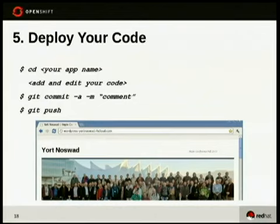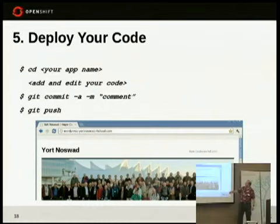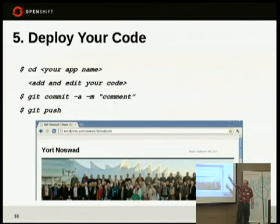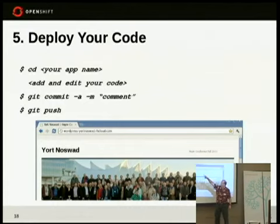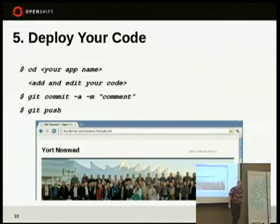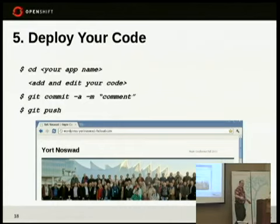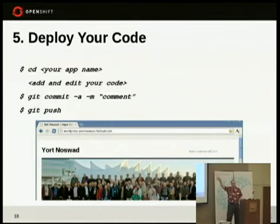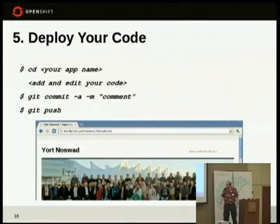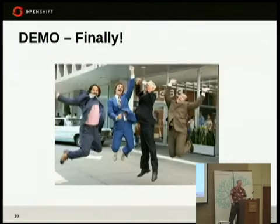Here's all you have to do to deploy your code — this is my WordPress one. We created the app, edited our code, and all you have to do is a 'git commit' and then 'git push', and it goes up to the cloud. It gets compiled if it needs to be, and then it gets pushed up and you can start working with it.